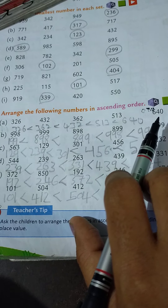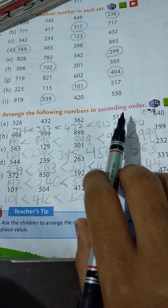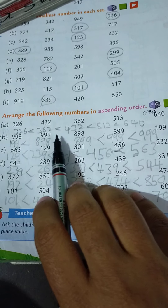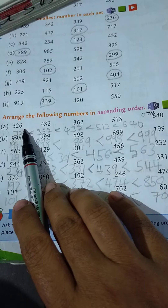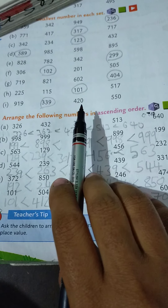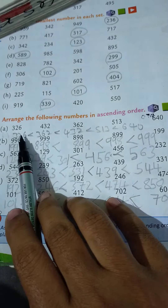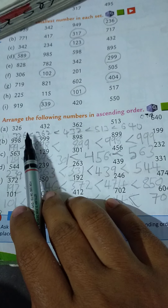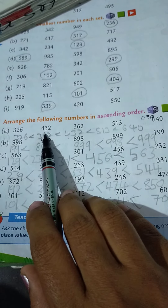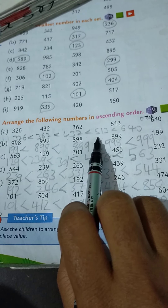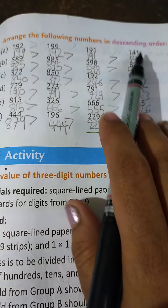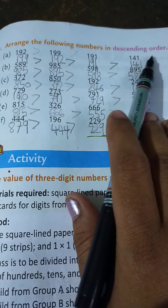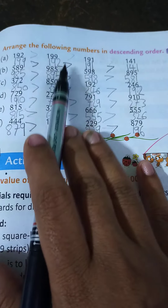Next one, ascending order. The numbers given are: 326, 432, 362, 513, and 640. Arrange in ascending order — ascending order means smallest to biggest, so which symbol is used? Less than. So: 326 less than 362 less than 432 less than 513 less than 640.